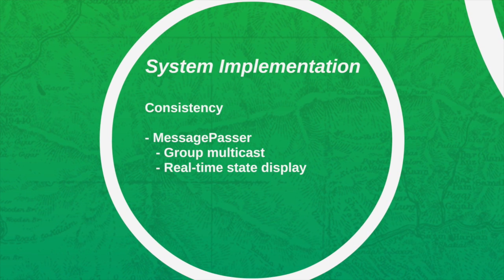Secondly, the consistency. When the game starts, the message parser embedded in the slave server will multicast to all other users in the same group based on the access code every second. In this case, a player can see all other players' states, which is the distance to the destination, in the front end and in real time.